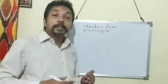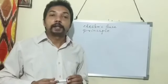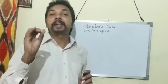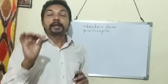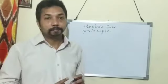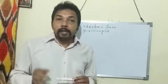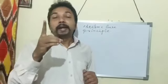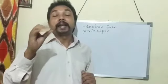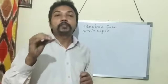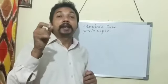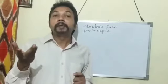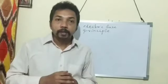What is the principle of electric fuse? The principle of electric fuse is the heating effect of electric current. An electric fuse is made up of an alloy of lead and tin — that is the material used to make the fuse wire.